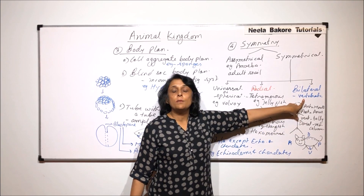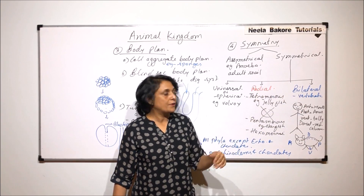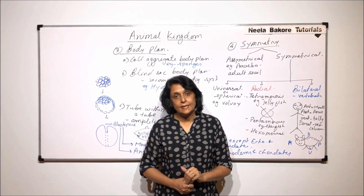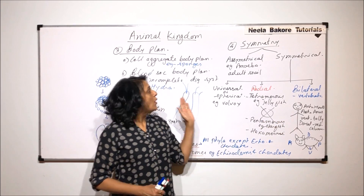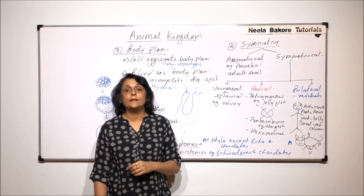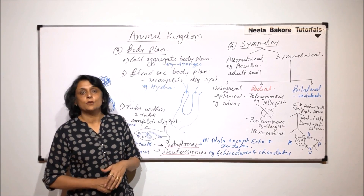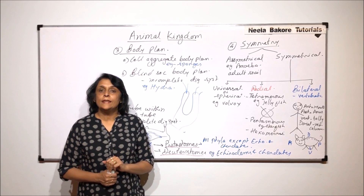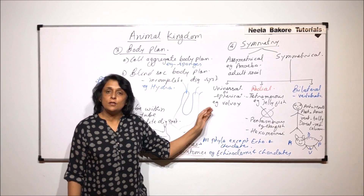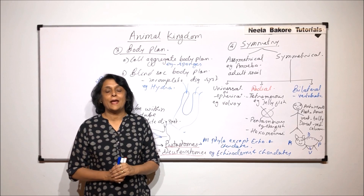So on these parameters too, we can find a vast variety of animals. In the next part, we will again take a few more parameters to see different types of animals.